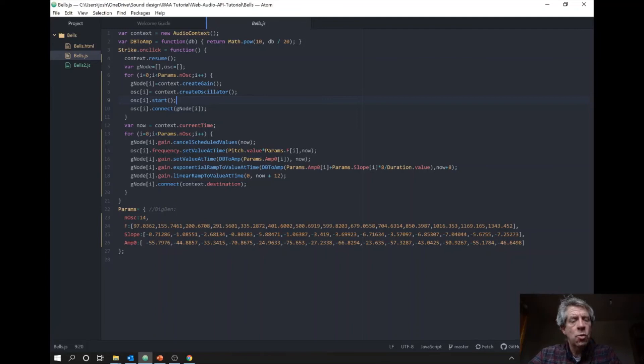So far it's not going to produce any sound because nothing is connected to the destination—there's no output. We have a graph but it's not connected so we can hear the output from any speakers. Now we're going to set what is the current time, and for every oscillator we do the following: any scheduled values we're going to cancel. There shouldn't be any scheduled values because we've just created these nodes.